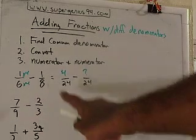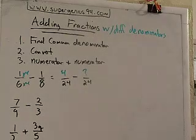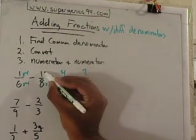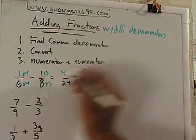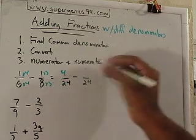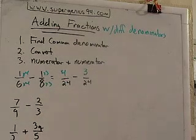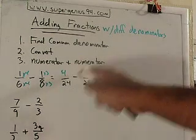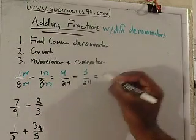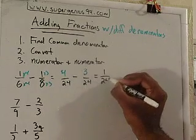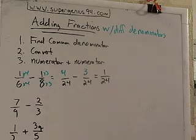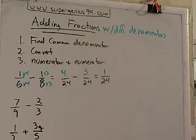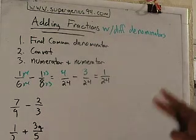And then you go back over here and say, 8 times what gives you 24? Well, 8 times 3 is 24, so then you multiply 1 times 3, which is 3. And then you just subtract 4 minus 3, which gives you 1. So 4 over 24 minus 3 over 24 is 1 over 24. Nothing reduced there, so we're done.